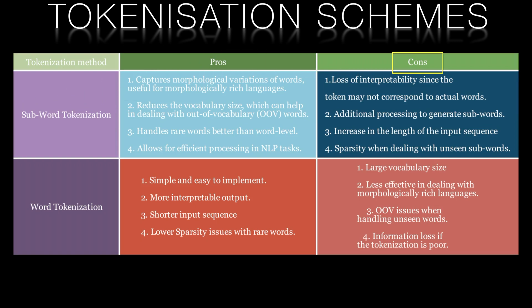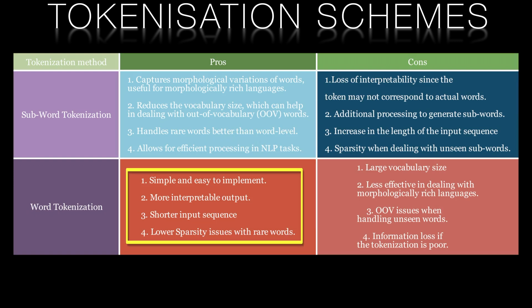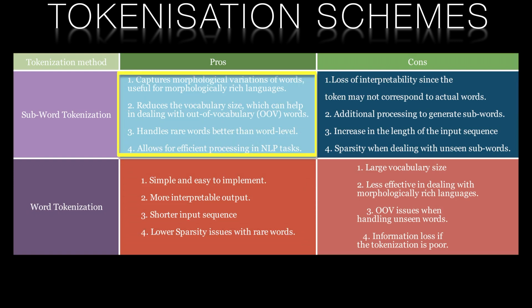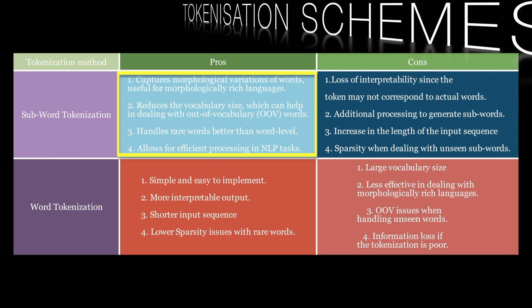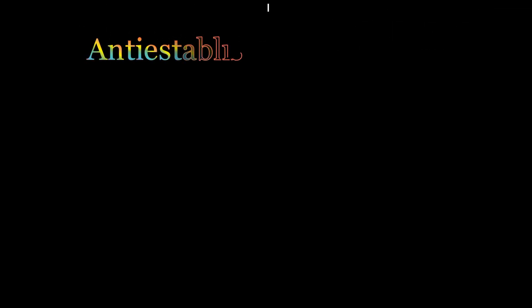Generally speaking, word tokenization is easier to implement and interpret, while subword tokenization is more flexible and efficient. Subword tokenization can also learn rare words that are not in the training corpus by being able to infer the meaning of sequences of subwords.